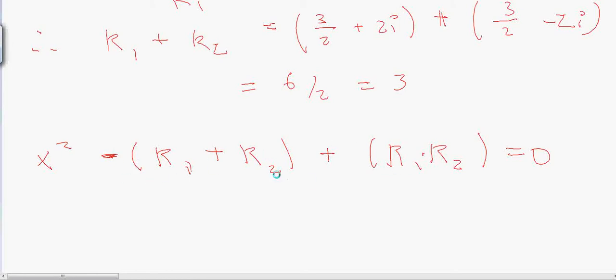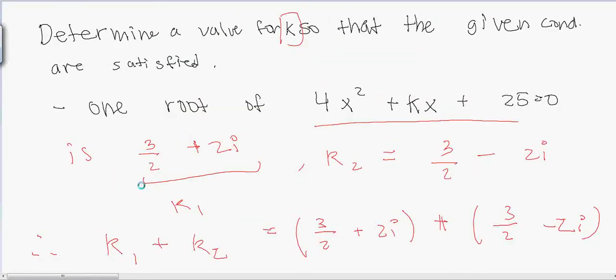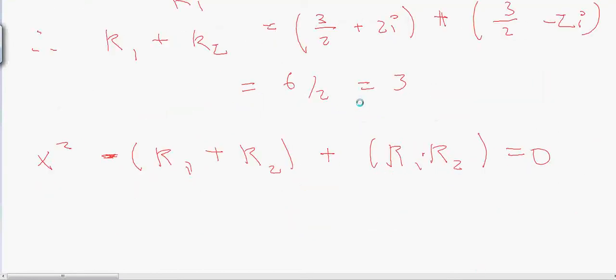Minus b term plus c term. So if you look back at this equation right here, you want to divide everything by 4 so you have a coefficient of x squared as 1.